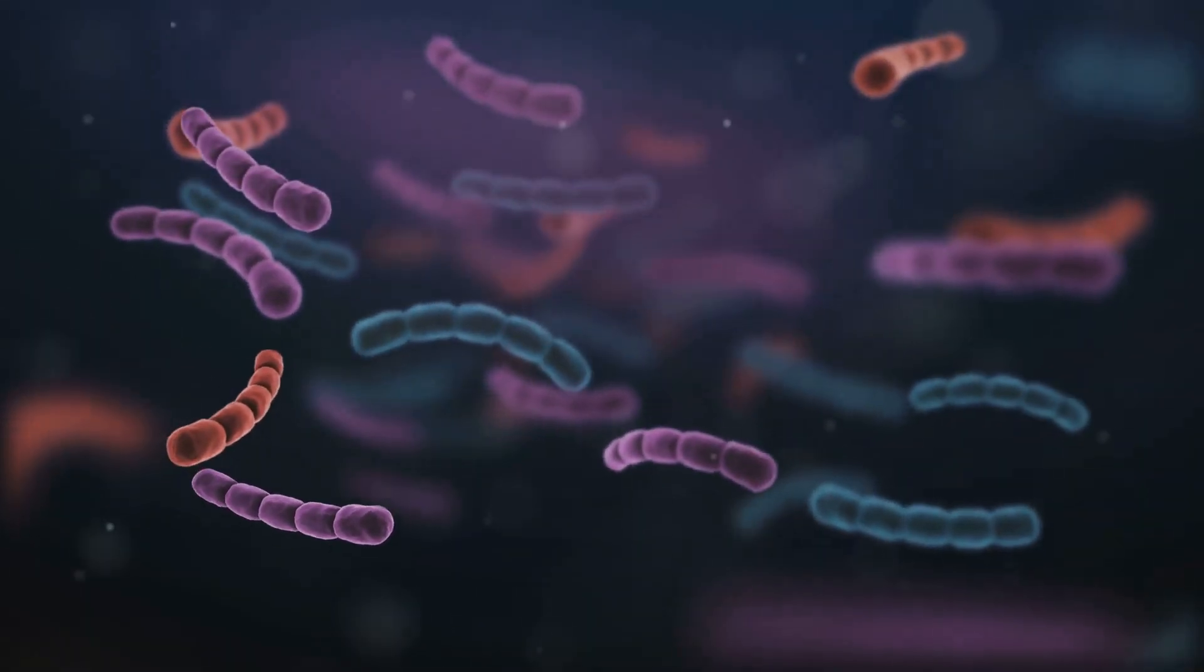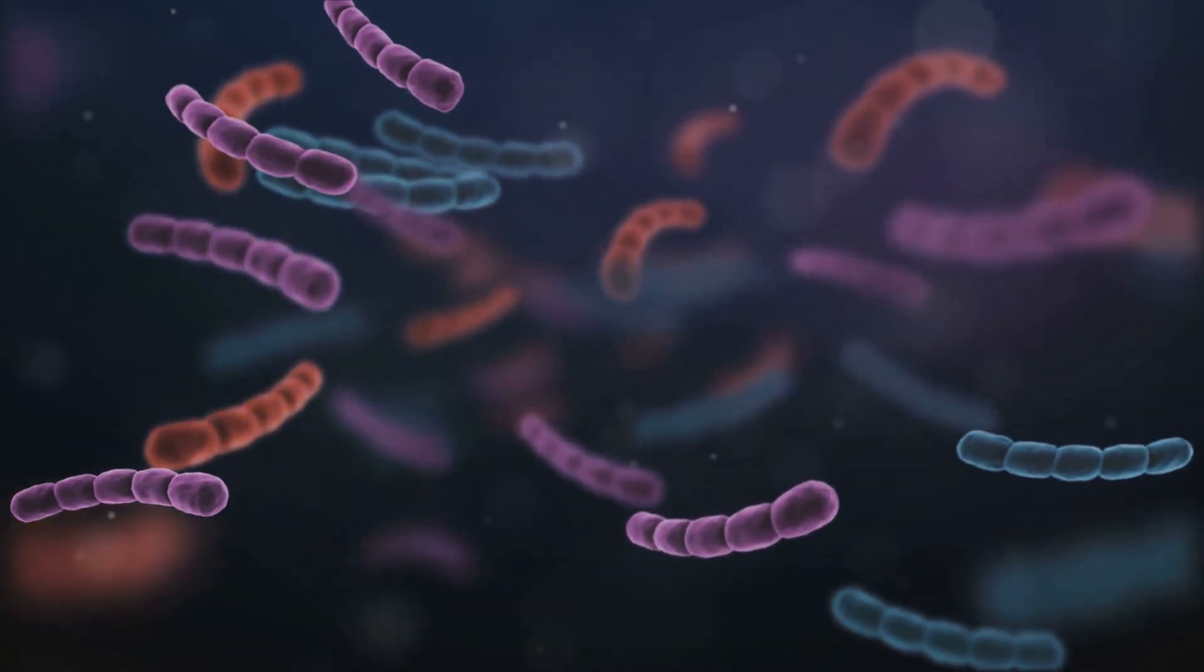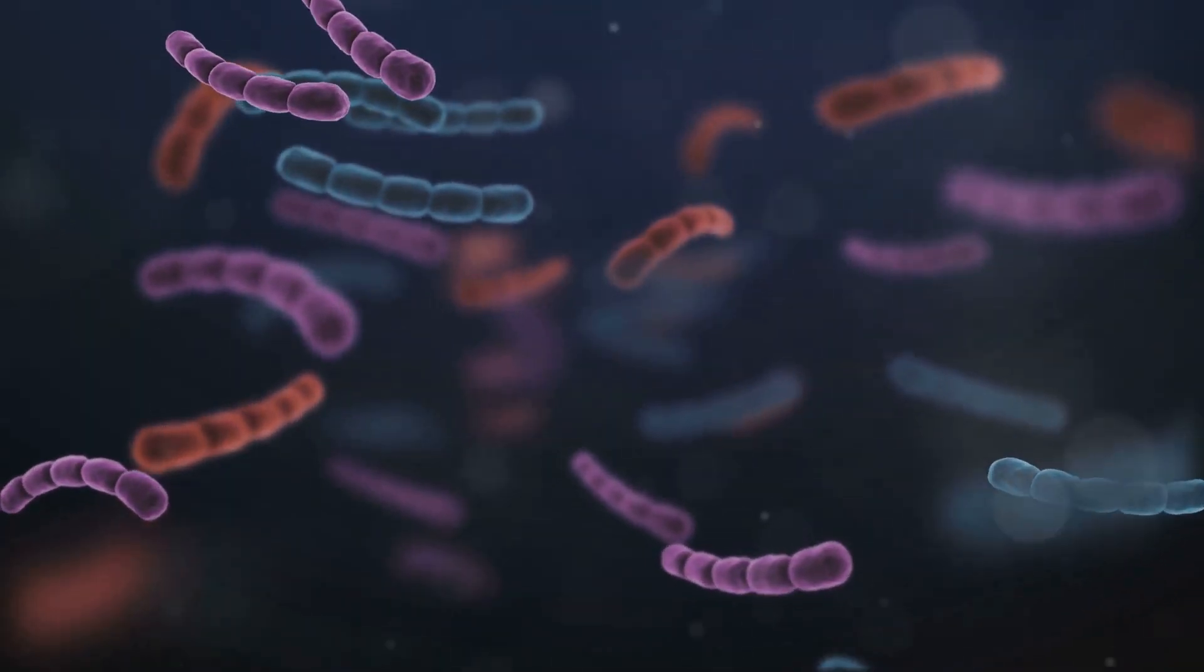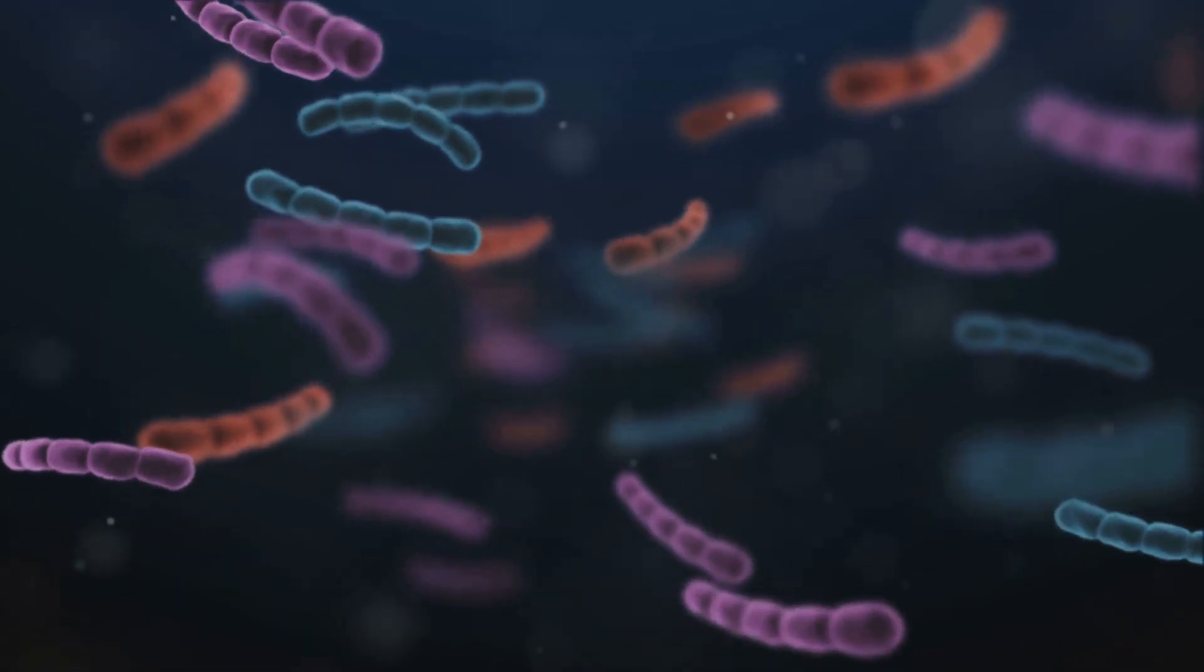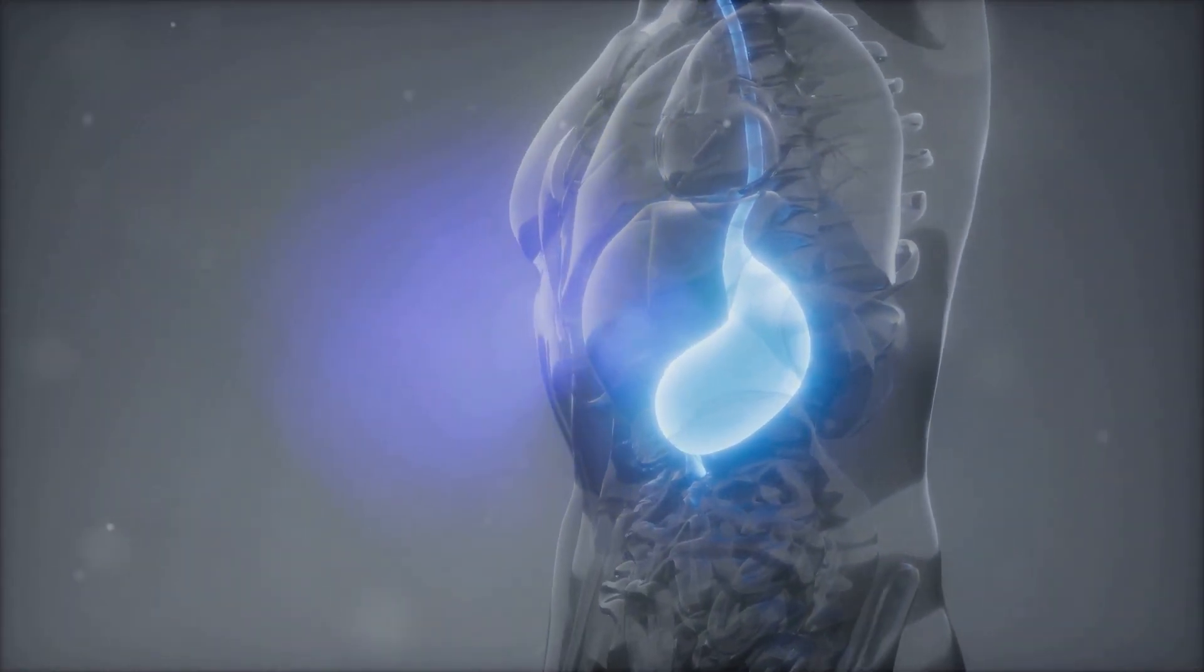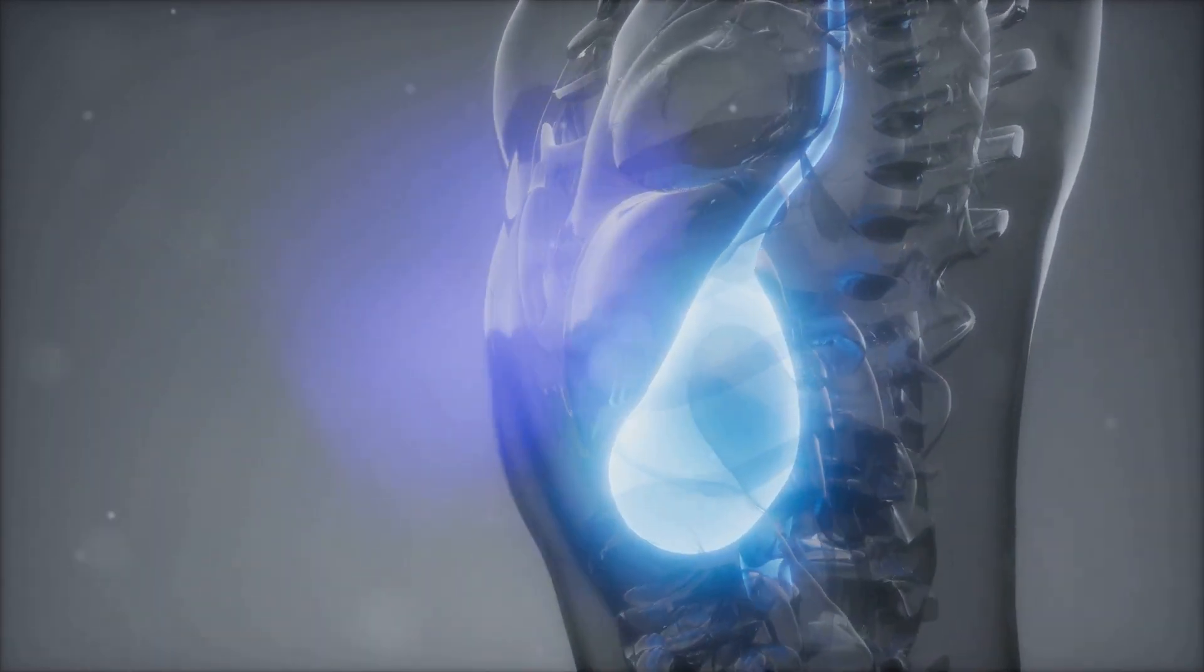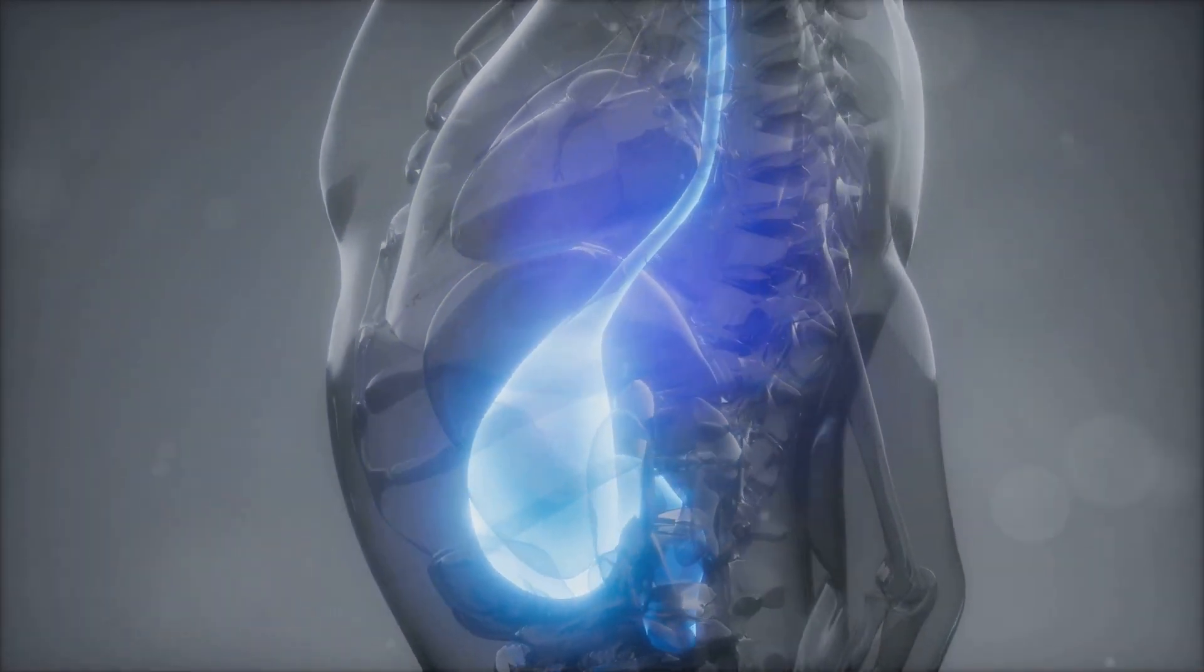As these beneficial bacteria ferment prebiotic fibers, they produce short-chain fatty acids (SCFAs) such as butyrate, acetate, and propionate. These SCFAs are essential for gut health, providing energy to the cells lining the gut, reducing inflammation, and strengthening the gut barrier, which prevents leaky gut syndrome.